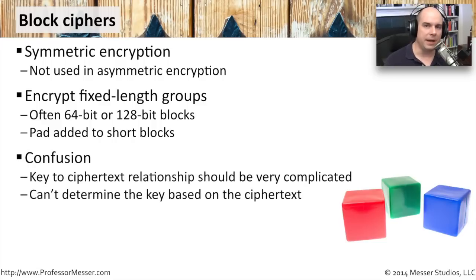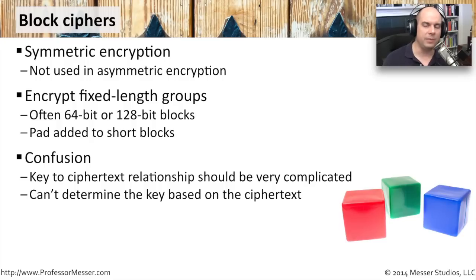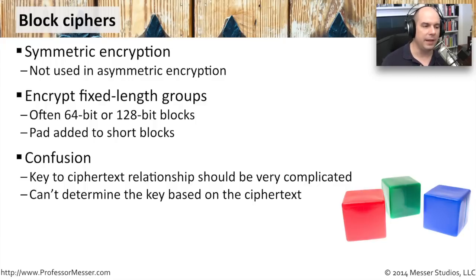There are a couple of things we should keep in mind when working with some of these ciphers. One of these is something called confusion. That means that the resulting ciphertext should look very different than your key. There should not be a way that you could look at the encrypted data and somehow figure out the key based on what you're seeing. That is called confusion, and it means there is a very complex relationship between the key and the ciphertext that is created.